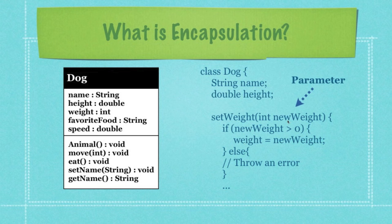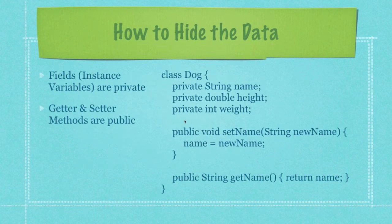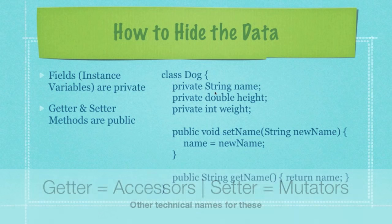And this, by the way, is called a parameter. Whenever you define the type of variable that is going to be passed to a method, it is referred to as a parameter. However, the value that is actually going to be passed to the method — like set name — is referred to as the argument. We hide all of our data by making fields private, meaning our instance variables, and then using setter and getter methods to make changes to these private variables.